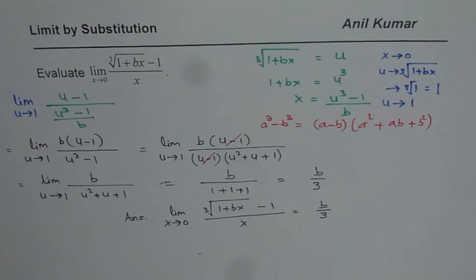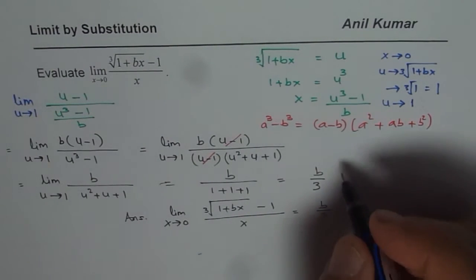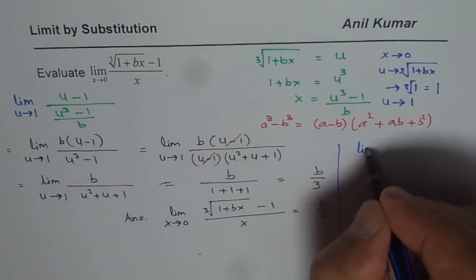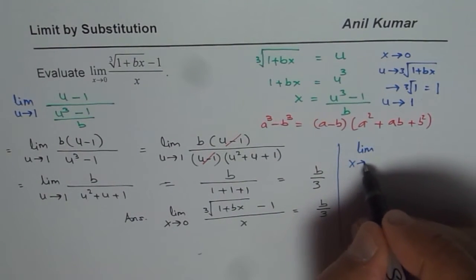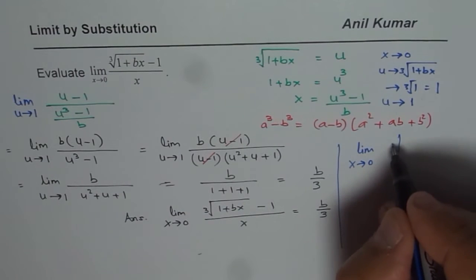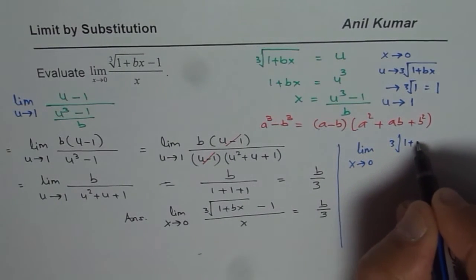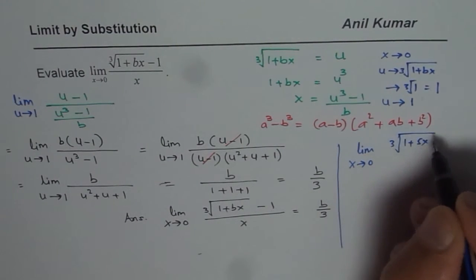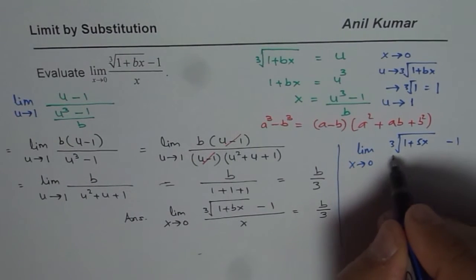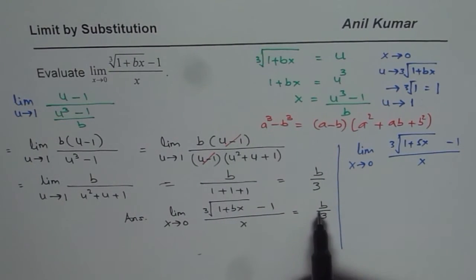So what I am trying to say here, this is a very general question solved for you. If I say find the limit for x approaches 0 for the function cube root of 1 plus, let us say, 5x minus 1 divided by x, so the answer will be 5 over 3. b is 5.